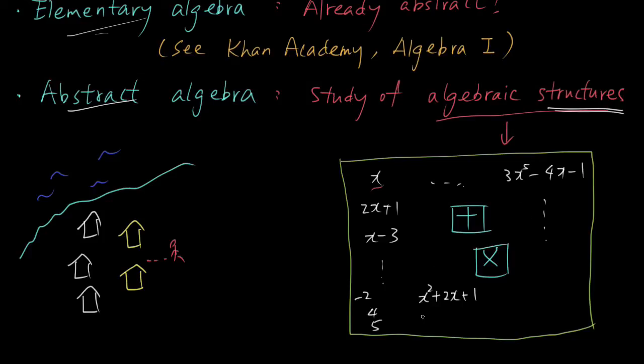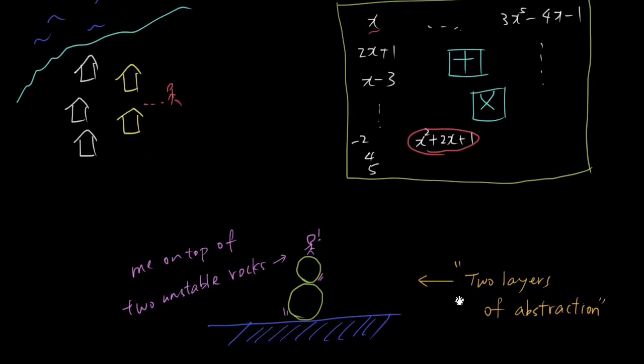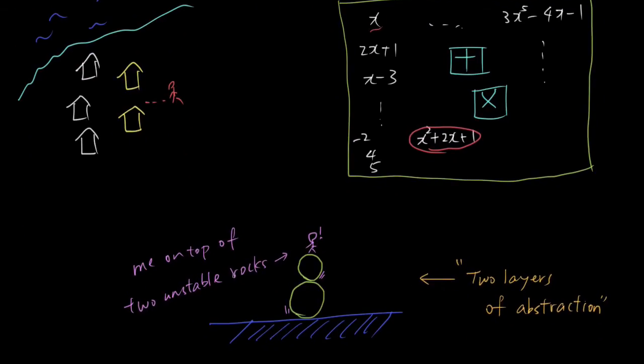And as you can see, we kind of have two layers of abstraction here, right? So this polynomial, a polynomial is an abstract entity, right? And then we are putting them inside this abstract box as a collection. So yeah, sometimes it gets kind of tricky, kind of like this picture here. That's me on top of two unstable rocks. That's the image I have.